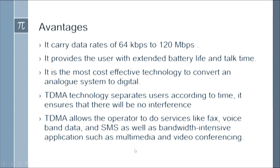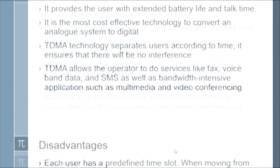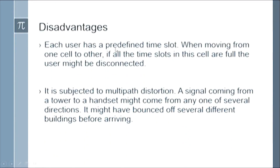There are some disadvantages of TDMA. First, each user has a predefined time slot — when moving from one cell to another, if all time slots in the new cell are full, the user might be disconnected. Additionally, TDMA is subject to multipath distortion: a signal coming from a tower to a handset might arrive from any one of several directions, having bounced off several different buildings before arriving.